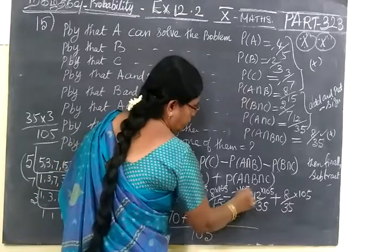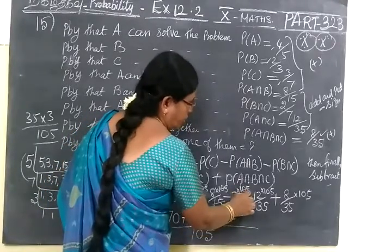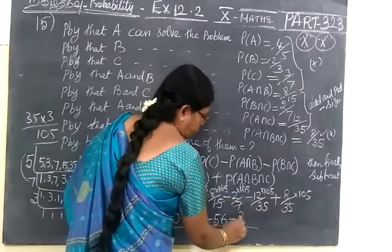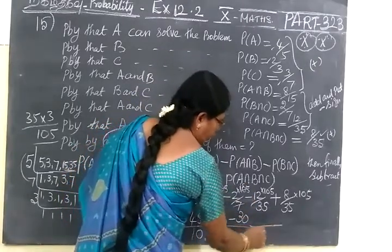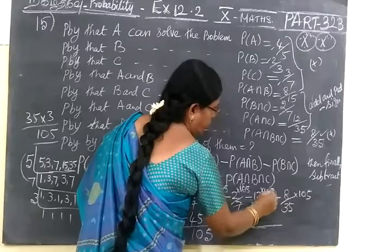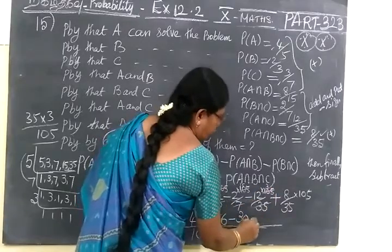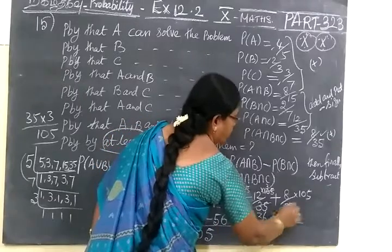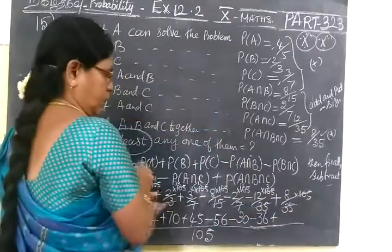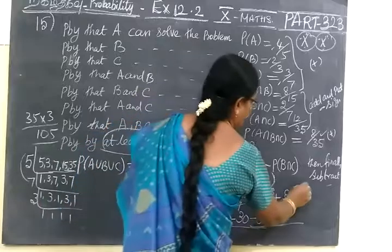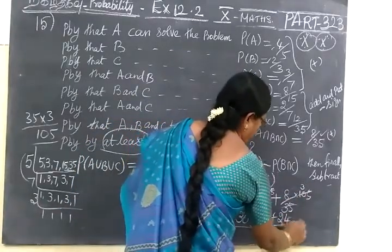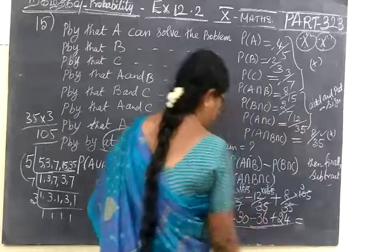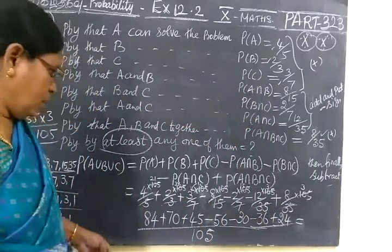Minus 56. Here also 1 times balance 3, 35, 15. So 15 into 2, 30. Minus 35, 3 times, so 36. Last one plus. So here also you correct it, so 3 times, so 3 times and 8, 3's are 24. 8, 3's are 24. 8, 3's are. Now we add.